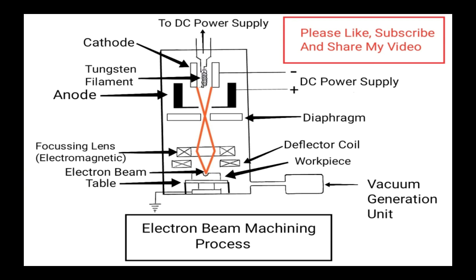This high-velocity beam of electrons impinges on the workpiece, where kinetic energy is released and converted into heat energy. The high-intensity heat so produced melts and vaporizes the work material at the spot of beam impingement. By alternately focusing and turning off the beam, the cutting process can be continued as long as needed.